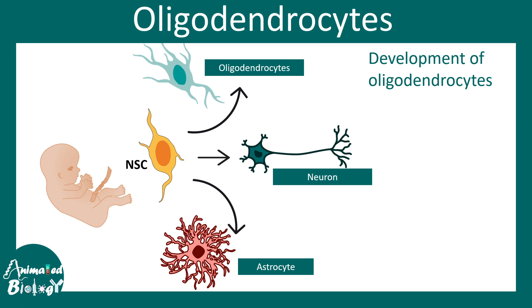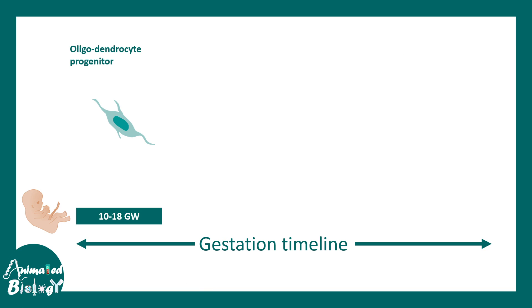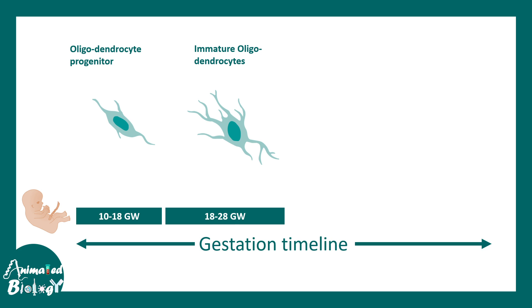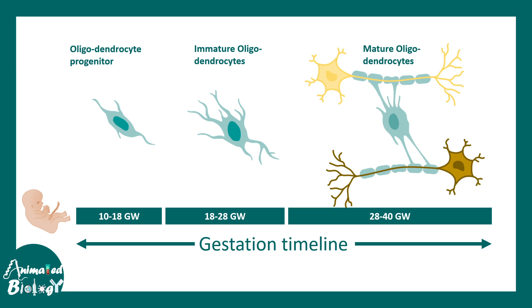There is temporal regulation which helps to produce oligodendrocytes. Neurogenesis happens quickly, while oligodendrogenesis takes place in the later half of embryonic gestation. In humans, oligodendrocyte progenitor cells develop around gestational weeks 10–18, immature oligodendrocytes form around GW 18–28, and mature oligodendrocytes form from approximately GW 28–40. Each stage is differentiated by specific markers.